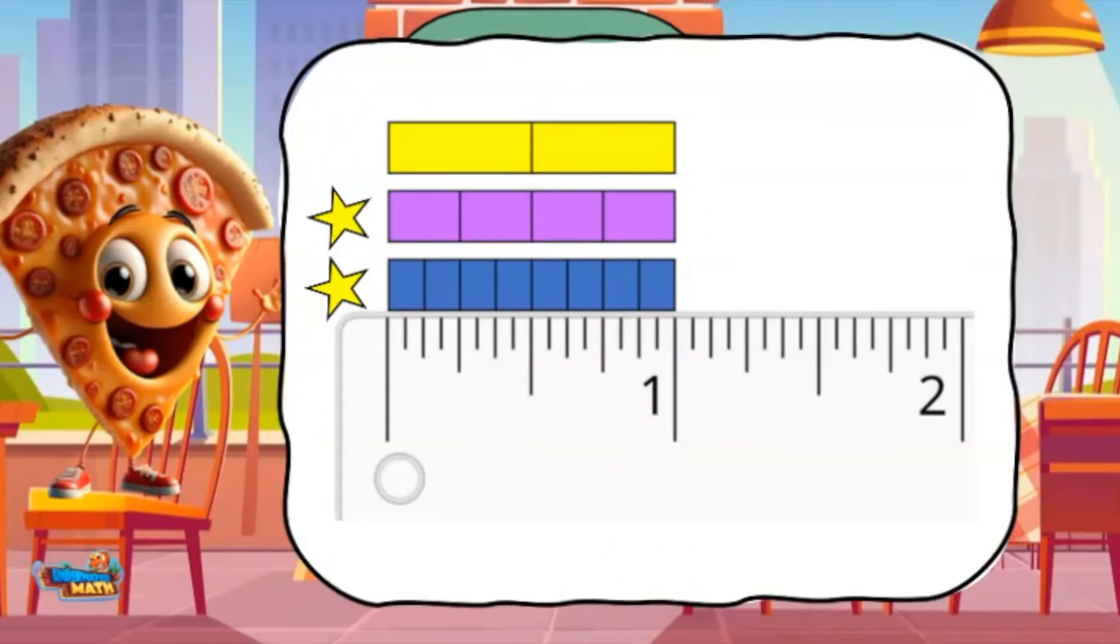The purple rectangles represent fourths because it takes 4 parts to make the whole. The yellow rectangles represent halves because it takes 2 of the parts to make the whole.